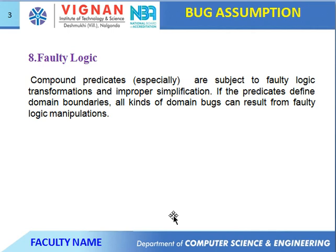Next one is faulty logic. Compound predicates are subject to faulty logic transformations and improper specification. If predicates define domain boundaries, all kinds of domain bugs can result from faulty logic manipulations.